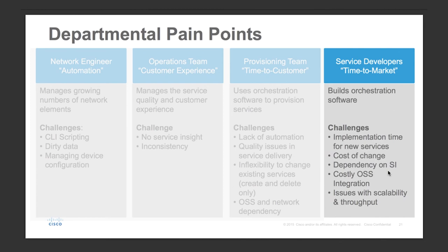When you have automation software running, a complexity added on top of all this is that there is an OSS system north of it. Typically in the NSO context, some kind of order management system which sends orders to NSO. That integration might be complex, looking at hard-coded APIs we've had before, and we're going to see how NSO addresses the flexibility around API integration and decouples the automation software from the upper OSS system.